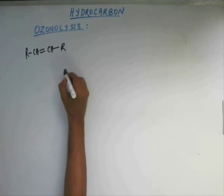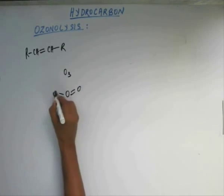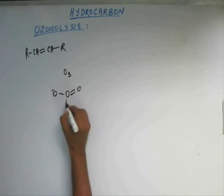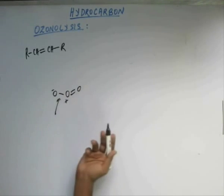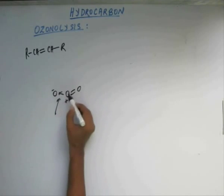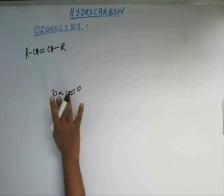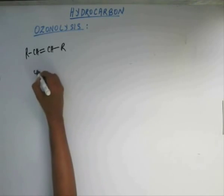Ozone is O3 and O3 has this structure. This bond is a coordinate bond — both the electrons from this bond are coming from this oxygen. This is how the structure is, as you must already know. So this ozone approaches this alkene to initiate the reaction.